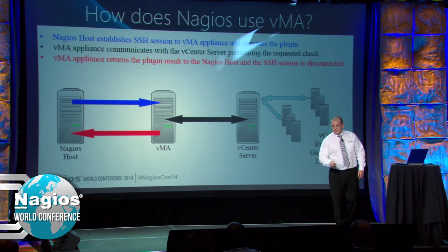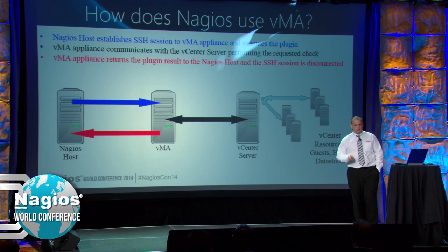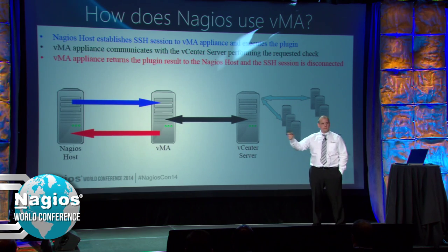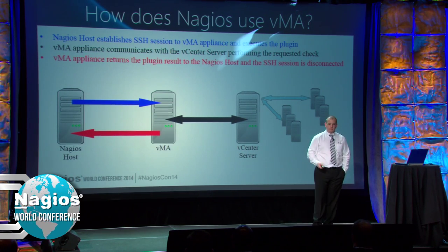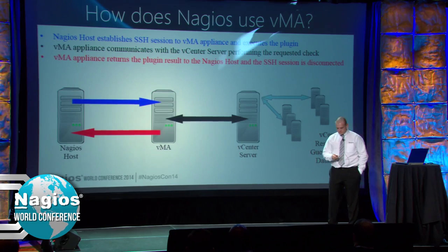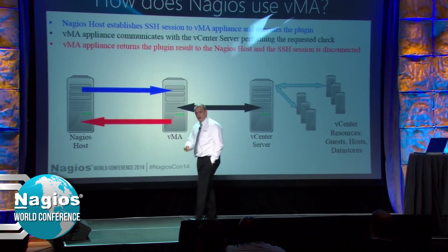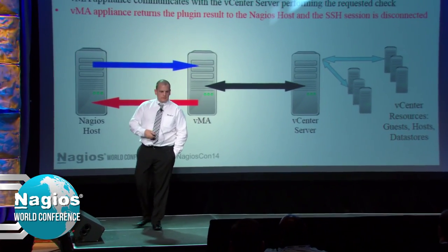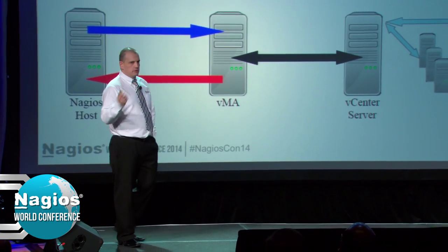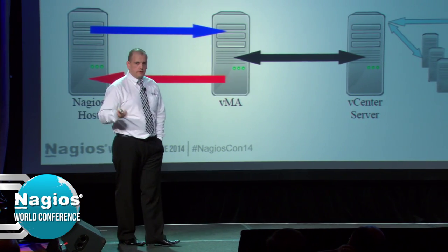So how does Nagios use VMA? It's very simple. The Nagios host itself does a check by SSH to the VMA appliance. The VMA appliance will talk to the vCenter server or the ESXi hosts, issue the request it wants, gets the data, and sends that back. So I'm not using check NRPE or anything like that. There's no agents to install. The most important thing is just having that SSH session working, which allows for a passwordless connection from your Nagios host to the VMA appliance and means you don't have to expose passwords in your configurations.